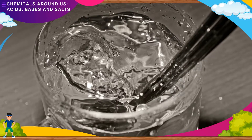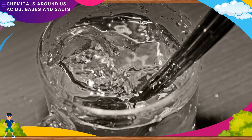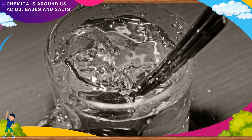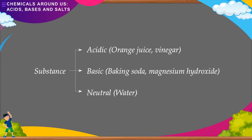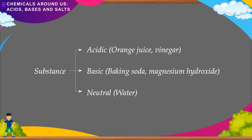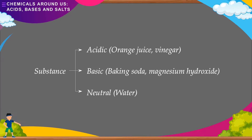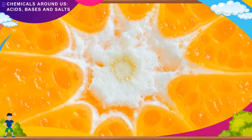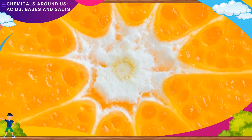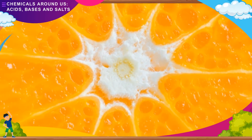The most common example of a neutral substance is water. Classification of substances on the basis of their nature: Acidic — orange juice, vinegar. Basic — baking soda, magnesium hydroxide. Neutral — water.